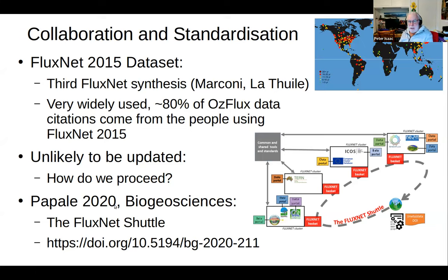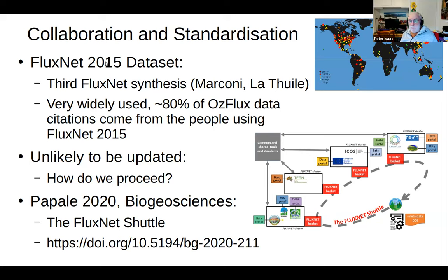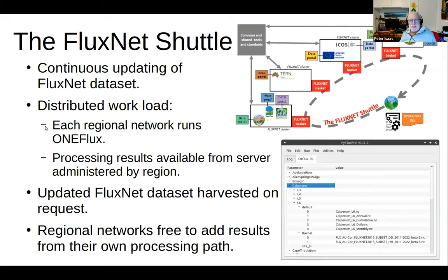Dario Papale wrote a paper in 2020 in Biogeosciences in which he proposes the Fluxnet Shuttle — an approach to achieve an ongoing update of that Fluxnet synthesis. The Fluxnet Shuttle is a mechanism to continuously update the Fluxnet data set by distributing the workload. Instead of being done by a single group of volunteers from AmeriFlux and ICOS, the workload is distributed across regional networks. Each regional network does its own processing using the OneFlux software, produces its own updated Fluxnet data set, and makes the results available from a regional server.